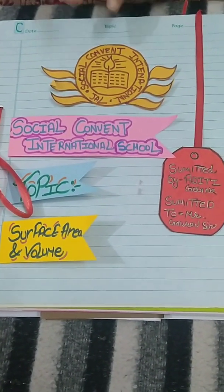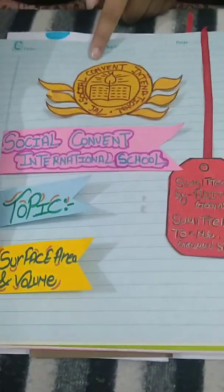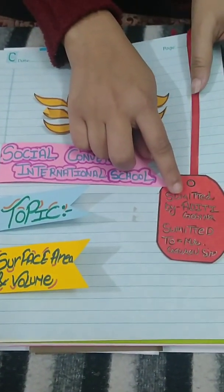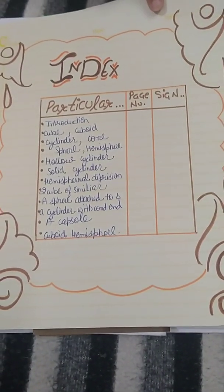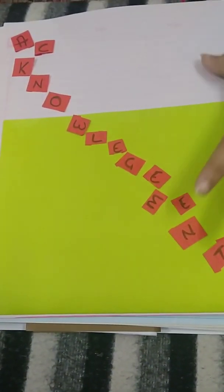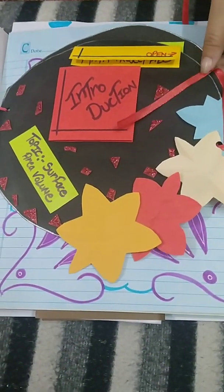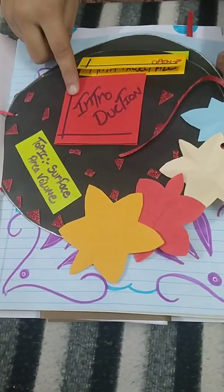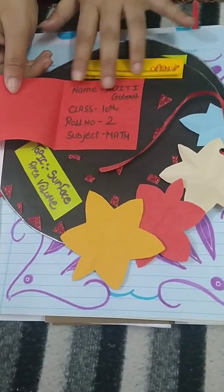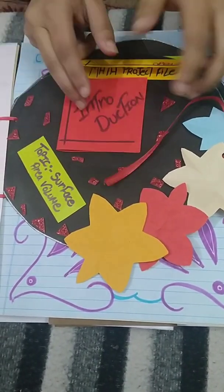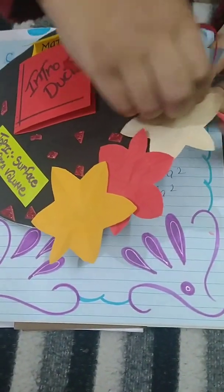This is the logo of our school social community, National School, along with the topic — surface area and volume — submitted to and submitted by. This is the index of my file, the acknowledgement, and this is the introduction of my math project file: name, class, volume, and subject topic. It can be opened like that.